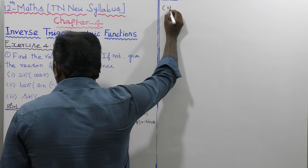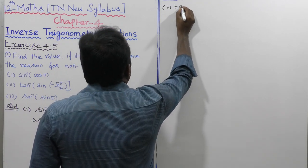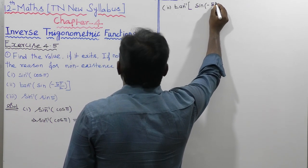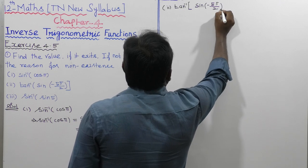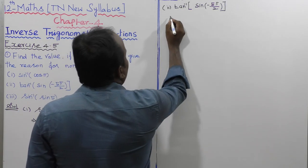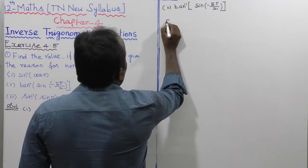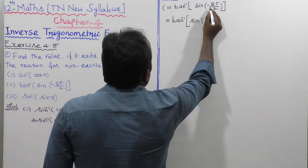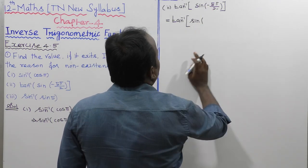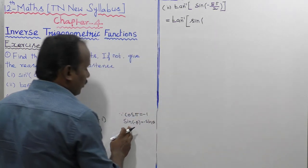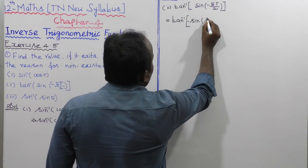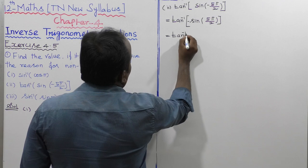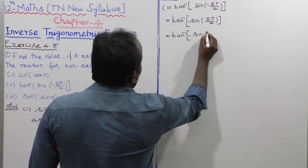Now going to the second subdivision: tan inverse of sin of minus 5 pi by 2. By using the formula sin of minus theta is equal to minus sin theta, so this equals tan inverse of minus sin of 5 pi by 2.